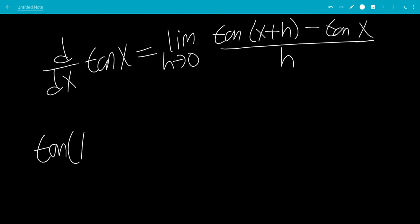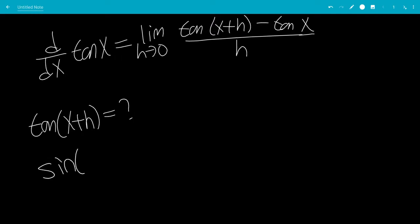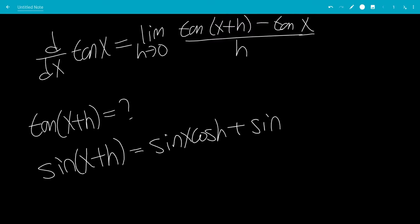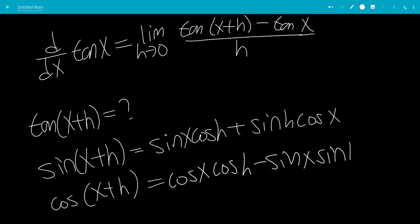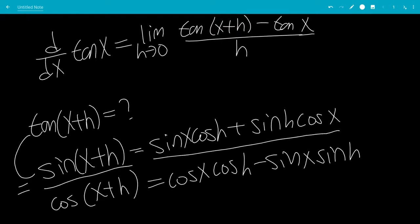So tangent of x plus h — we need to know what sine of x plus h is. The sine of x plus h is sine x cosine h plus sine h cosine x. We know cosine of x plus h is cosine x cosine h minus sine x sine h. And tangent x plus h is just this sine x plus h divided by cosine x plus h.